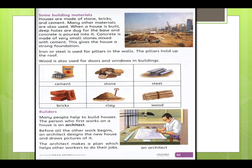This is the end of my lesson. In today's lesson we have learnt why we need a house — it protects us and it is a place where a family can live together. A house keeps us warm when it is cold outside and cool when it is warm outside. We also learnt which building materials are used in making houses, and we learnt about the builders — specifically the architect. Please do read these two pages. Thanks for watching.